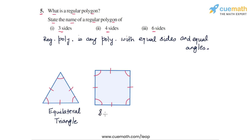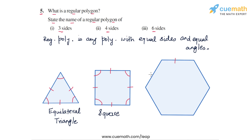A regular polygon of 4 sides will actually be a square. And then a regular polygon of 6 sides will look like this. All 6 sides of this polygon will be equal, and similarly all the angles of this 6-sided polygon will be exactly equal — and in this case, each of the angles will be equal to 120 degrees. So a regular polygon of 6 sides is a hexagon, which has all of its sides and angles equal, so we can call it a regular hexagon.